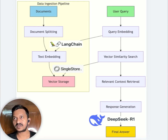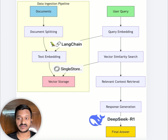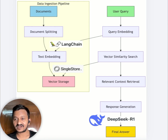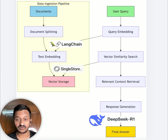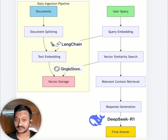SingleStore is an all-in-one database that helps you not just as a vector database, but also with your OLAP and OLTP workloads. It has cool features like a notebook feature where you can use the integrated notebook that SingleStore provides. And SingleStore also has a free shared tier, so it's free to use.